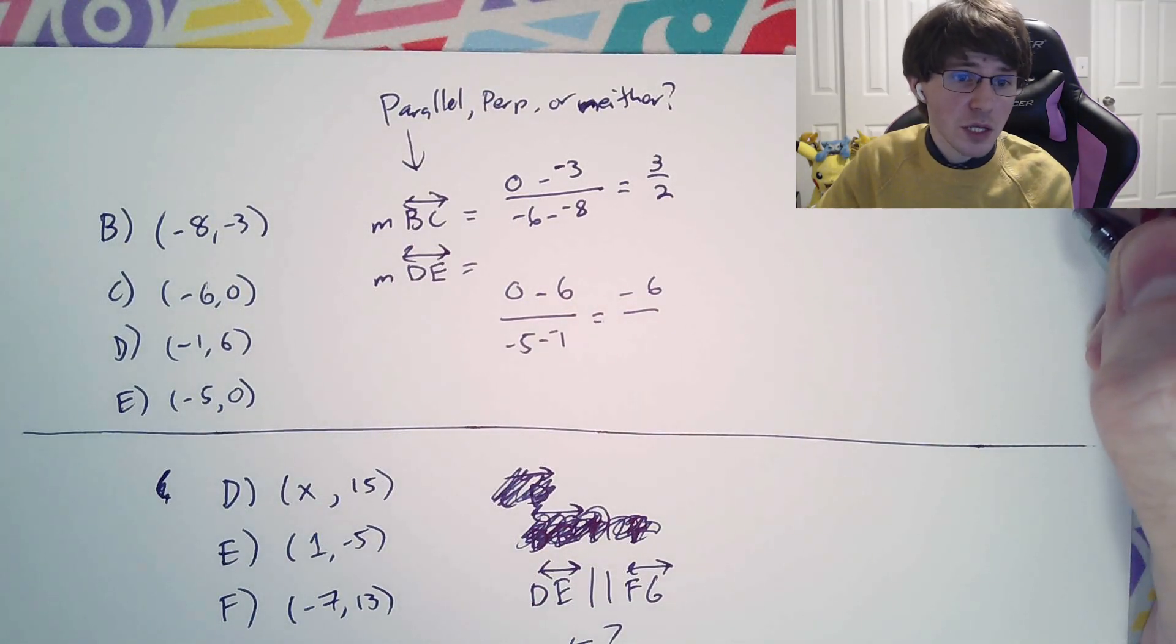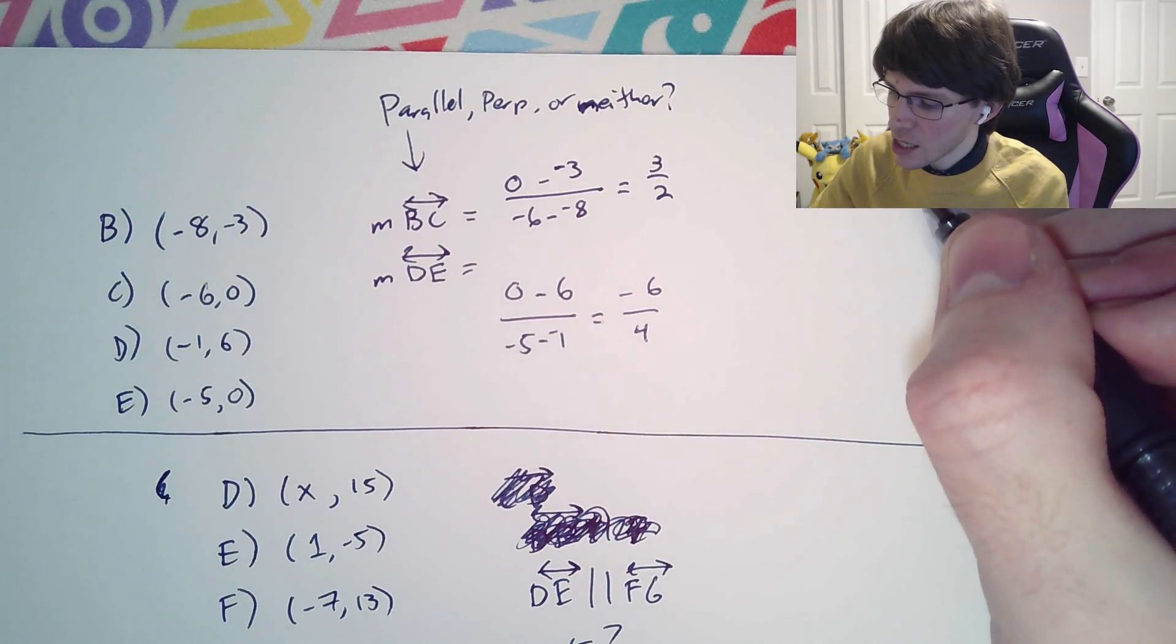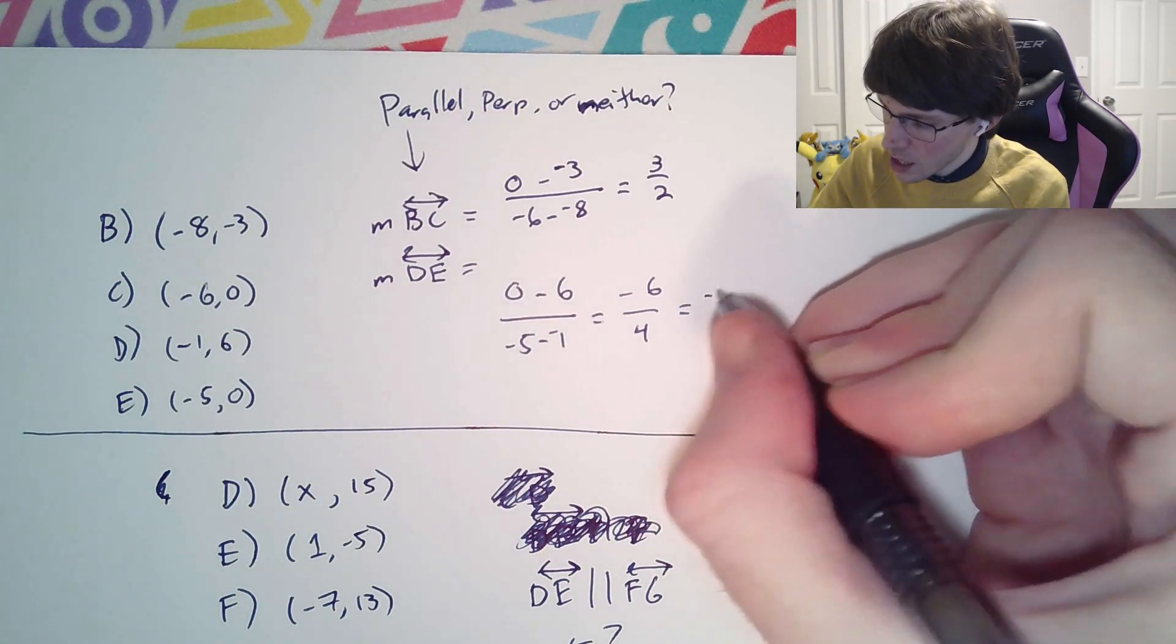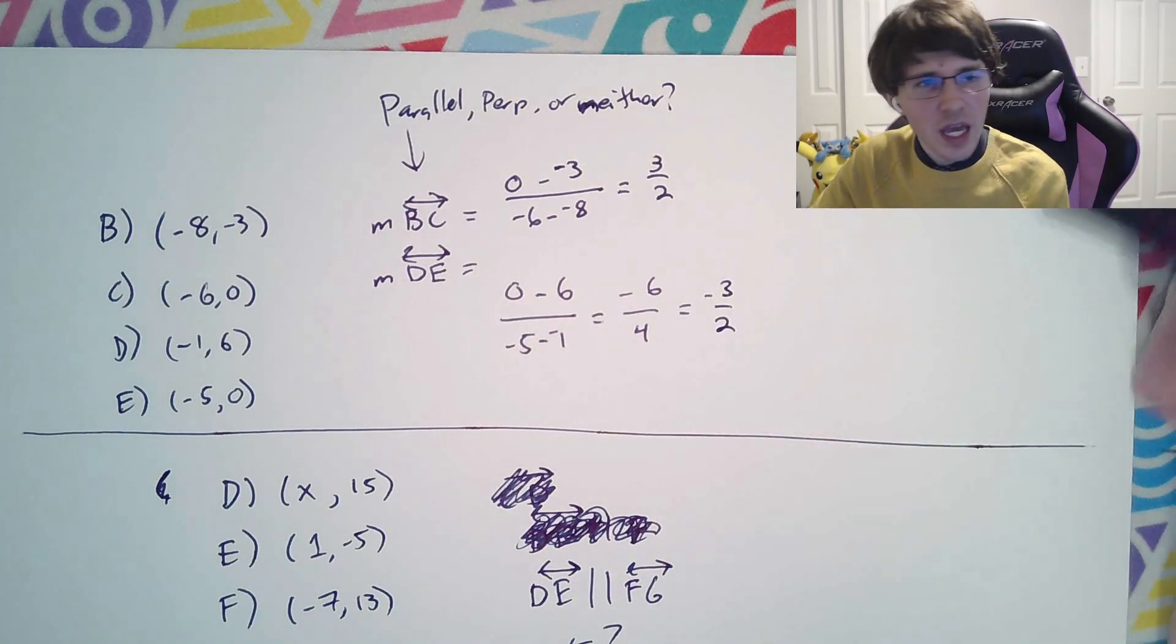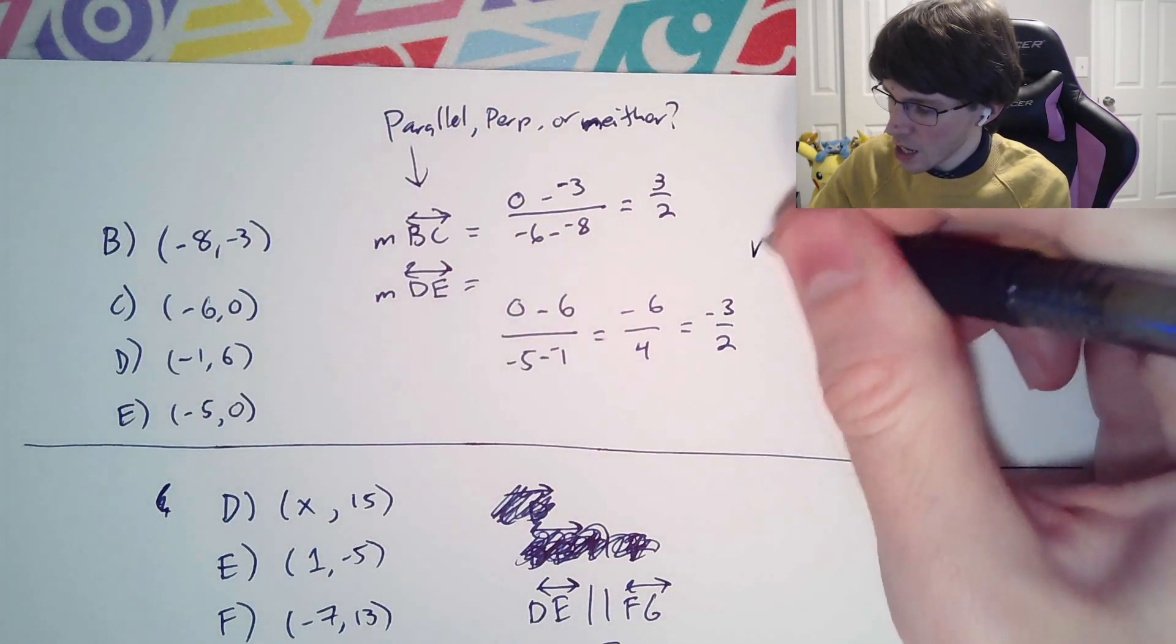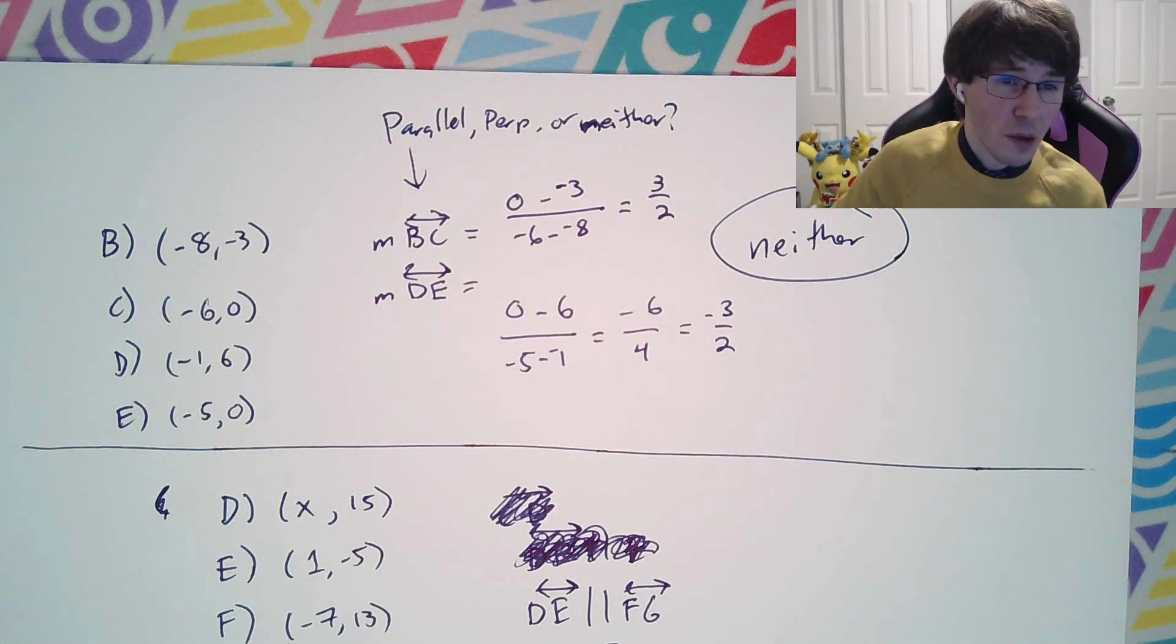That's negative 5 plus 1 is going to be 4. Now, if we went ahead and reduced this one, we'd end up with negative 3 over 2. Now, these aren't the same. They're not negative reciprocals. So we would say these guys are neither parallel nor perpendicular. They are simply neither because they're not exactly the same or upside down versions of each other.